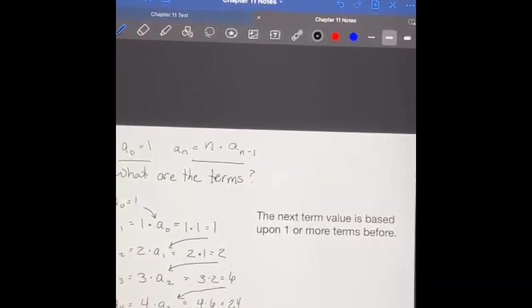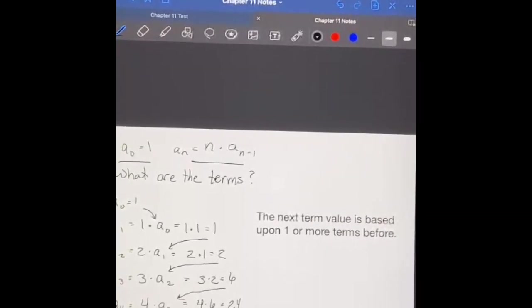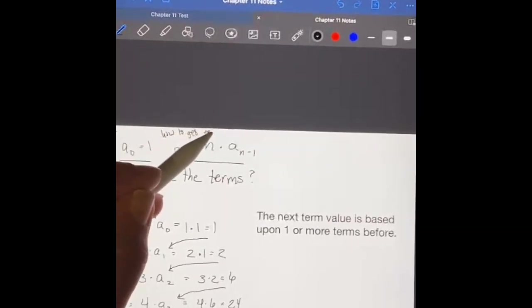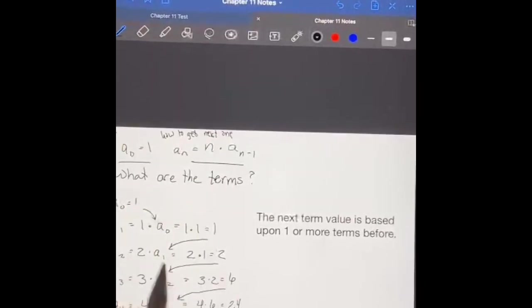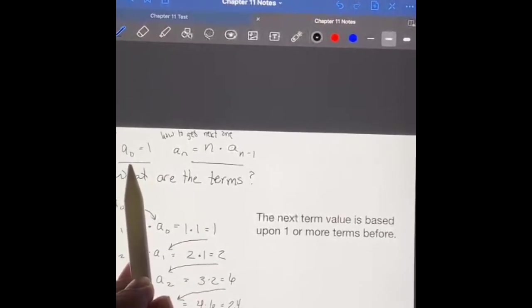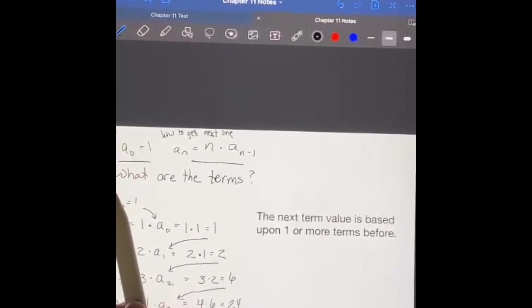They have to tell you where to start, and then they have to tell you how to get the next one. So when you write out a recursive rule, you're always going to write, where are you starting? If we don't know where we're starting, we cannot have a recursive rule. So where do we start, and how do we get to the next one?